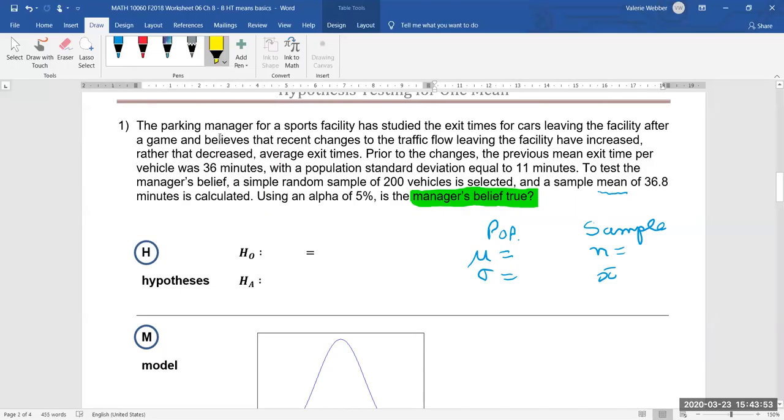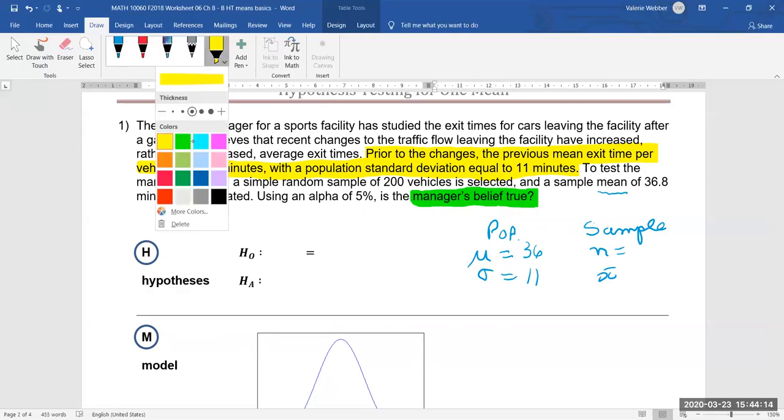So we have here prior to changes the previous mean exit time was 36 and the population standard deviation was 11. So here we can have 36 and 11 and then if we're looking for our sample information let's put that in maybe pink here.